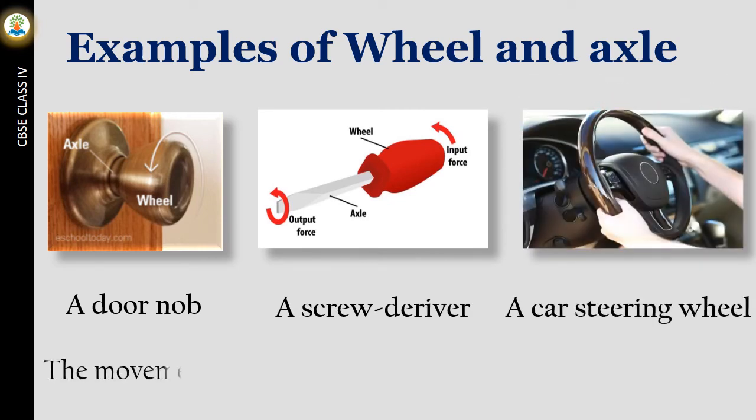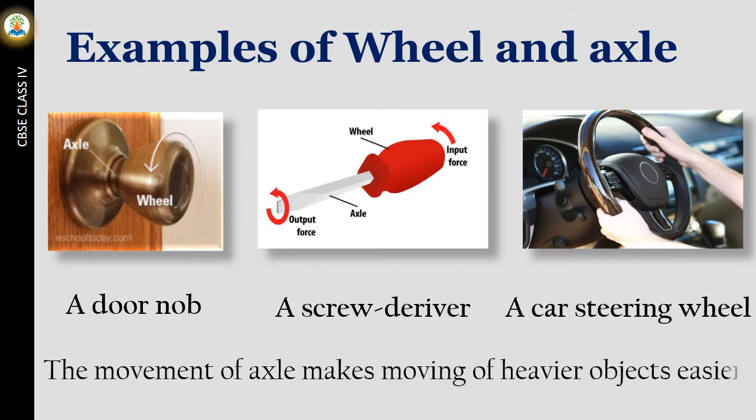The movement of axle makes moving of heavier objects easier. A car steering wheel, a door knob and a screwdriver are the examples of wheel and axle.